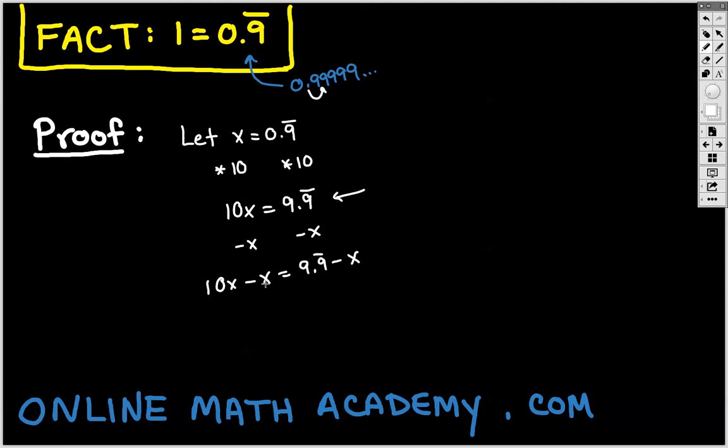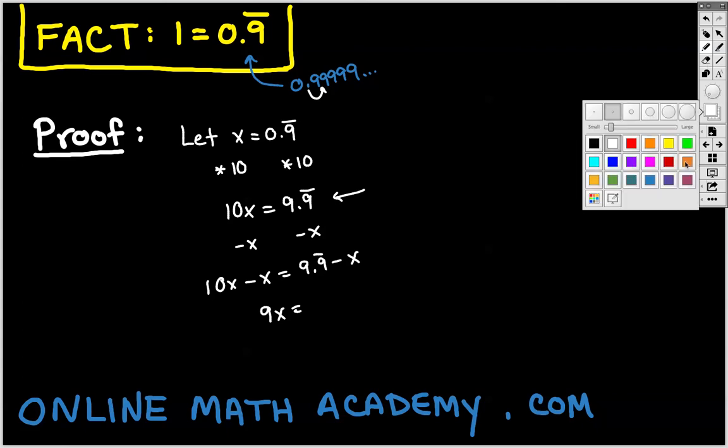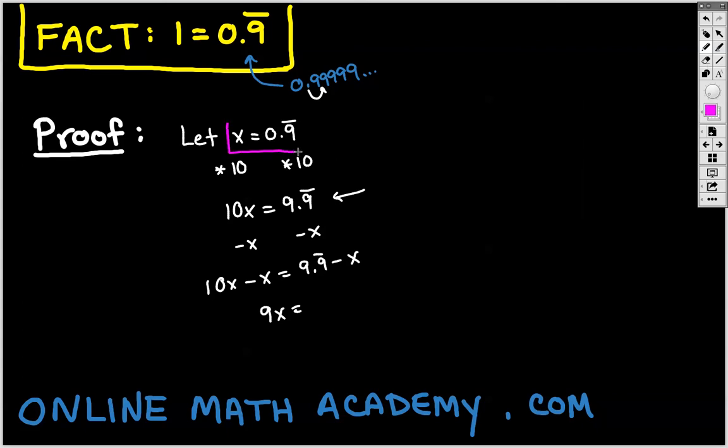Well 10x take away 1x is 9x. And over on the right side we're going to rewrite x. Remember, x is equal to 0.9 repeating. So we are going to rewrite x as 0.9 repeating. And this side is 9.9 repeating minus 0.9 repeating. Well if we simplify that, 9.9 repeating minus 0.9 repeating is just going to give us 9. So we're going to be left with 9x equals 9.